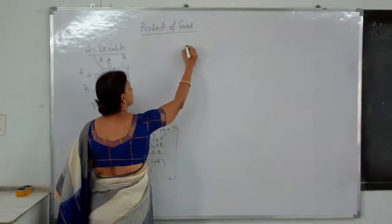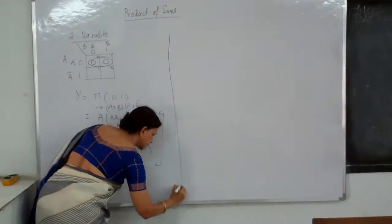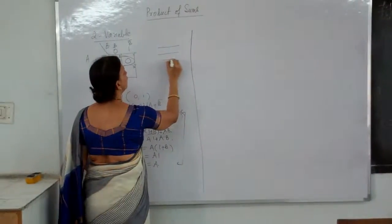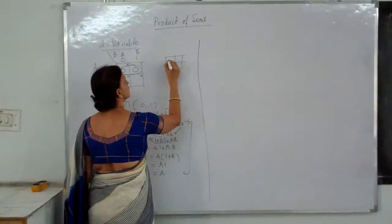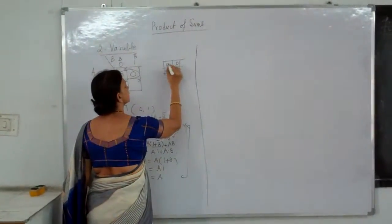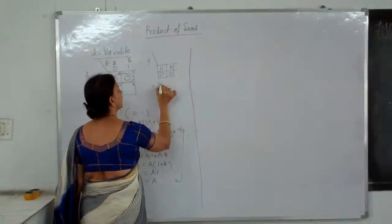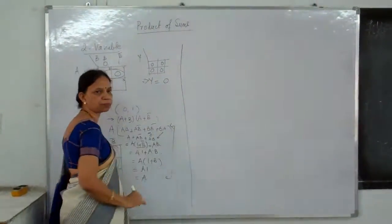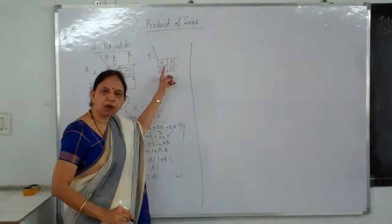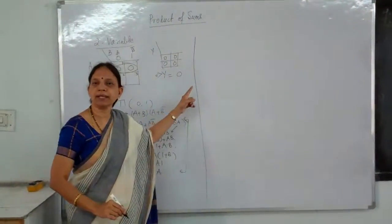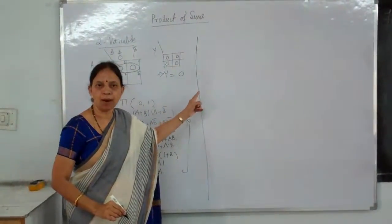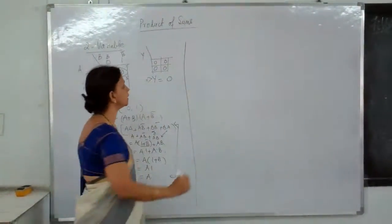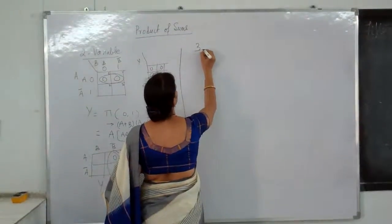This is as far as the 2-variable map is concerned. Now suppose if you take all of them as 0s, your Y implies Y = 0. If you put all of them as 1s, you would have got Y = 1, but now you are getting Y = 0. Is it clear? Let's move on to the next one.